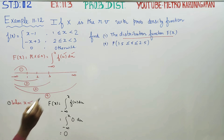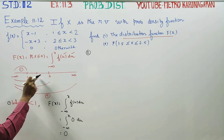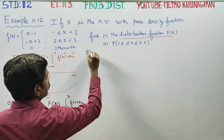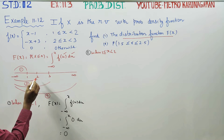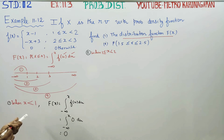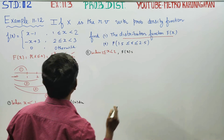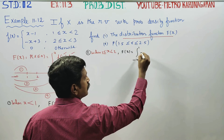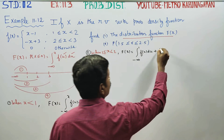Second part: when x is from 1 to 2. For the second capital F of X, you have to start from the beginning — from minus infinity. So the integral splits: minus infinity to 1 of f(u) du, plus 1 to x of f(u) du.